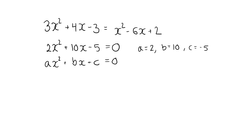A quadratic equation is called a reduced quadratic equation if a is equal to 1. My example is not a reduced quadratic equation, but a general quadratic equation. However, it can be turned into a reduced one simply by dividing both sides by 2, giving the reduced quadratic equation x squared plus 5x minus 2.5 equals 0.